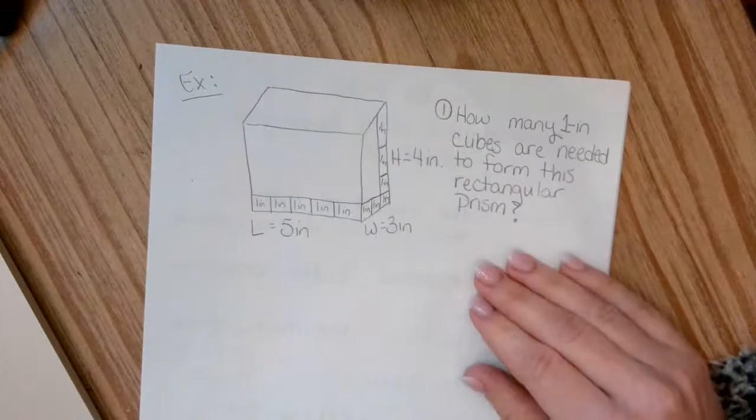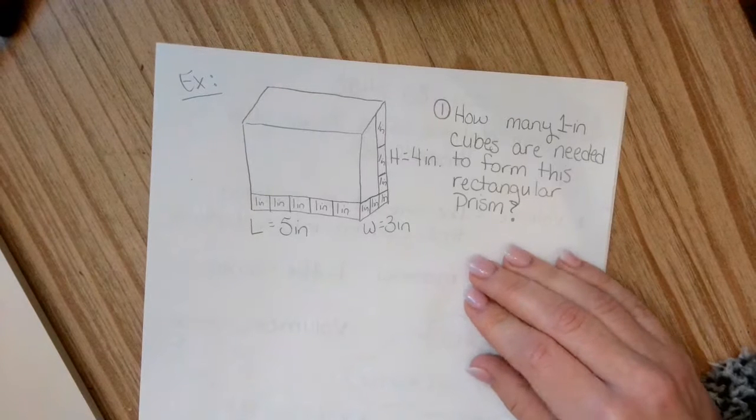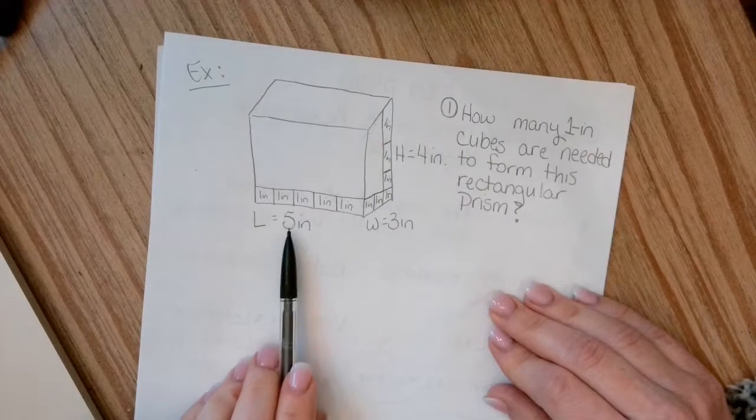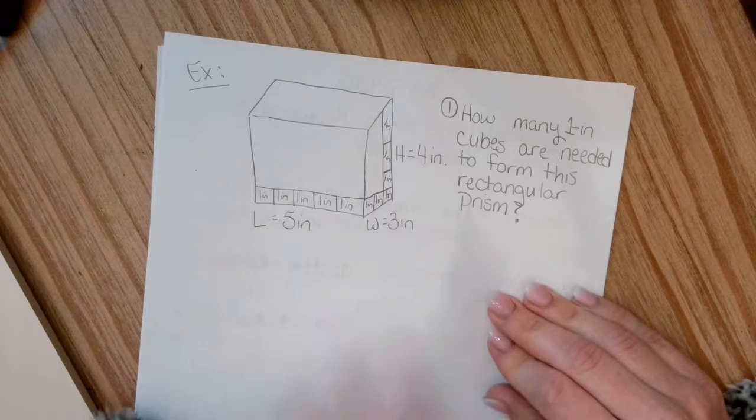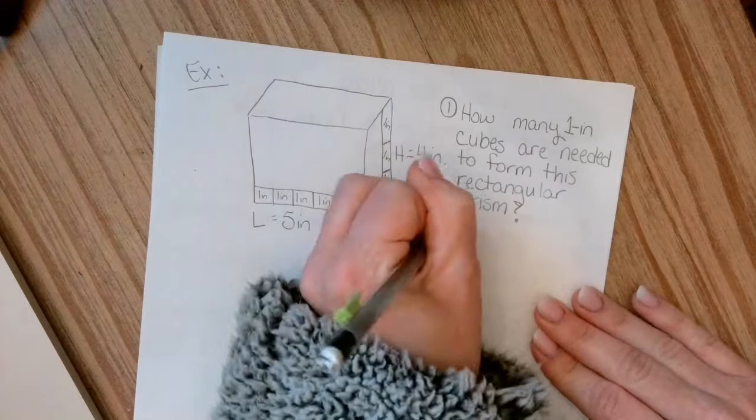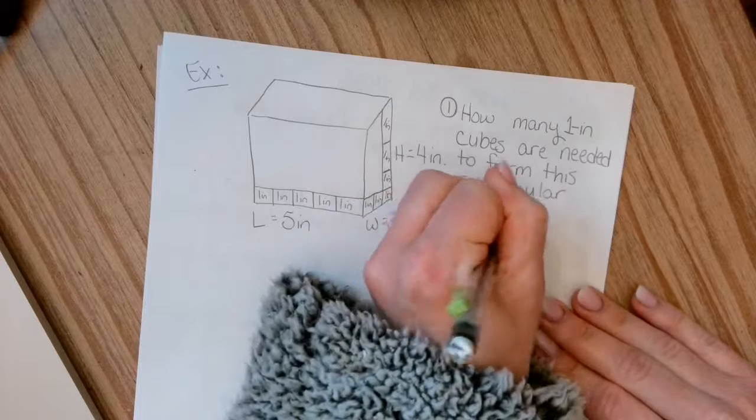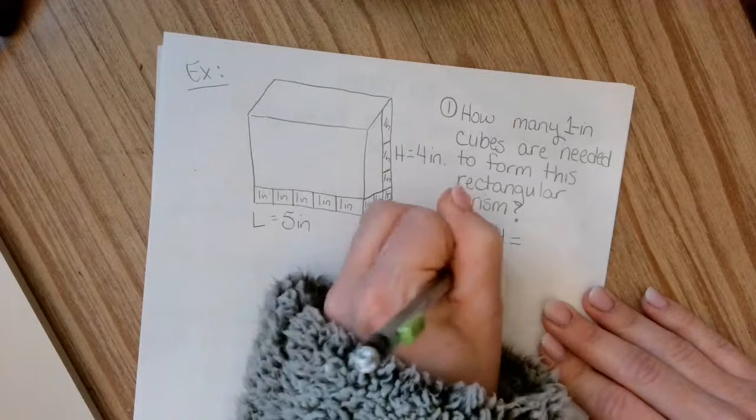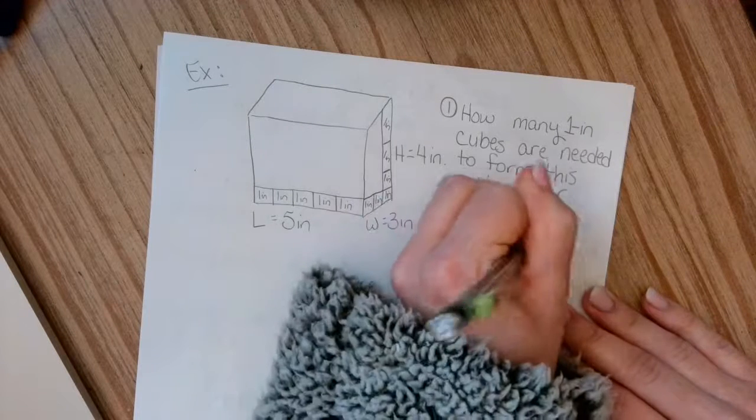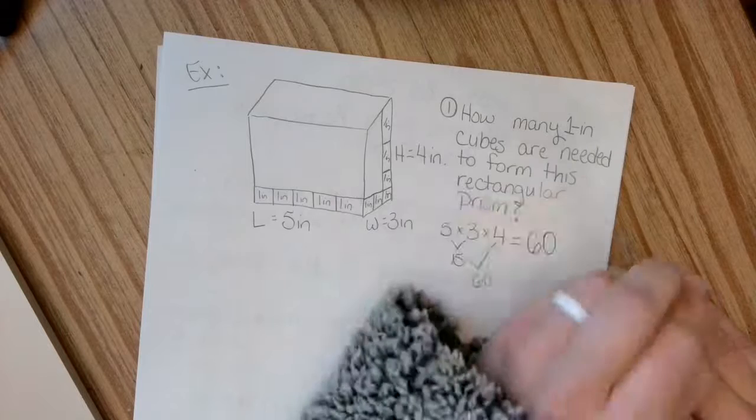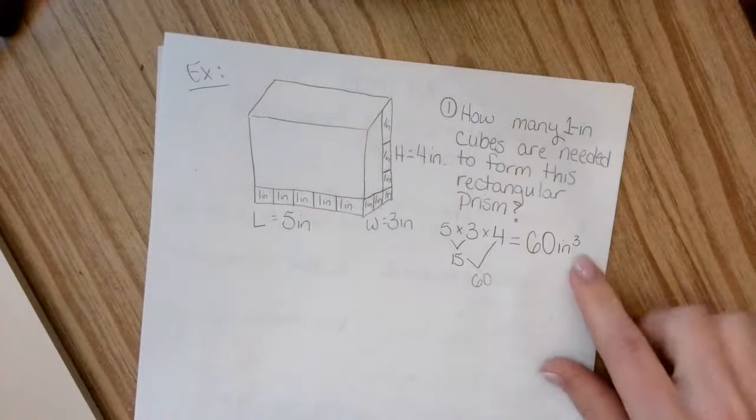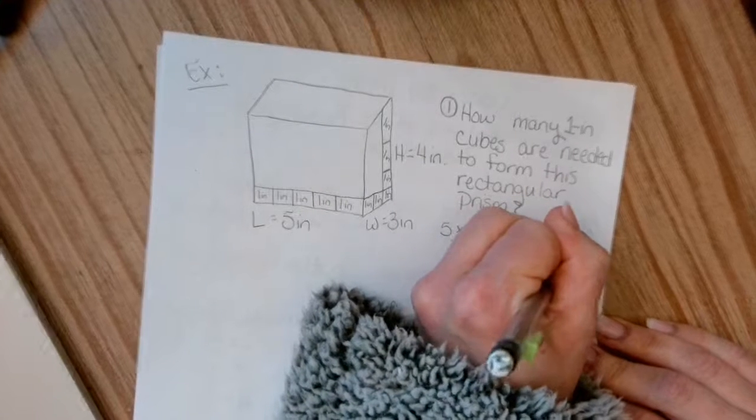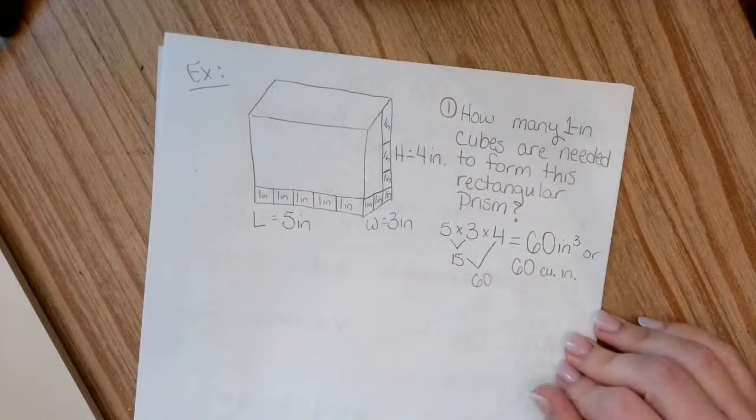So all this is actually asking us to do is just get the volume. It's just worded a little bit more complicated to get you to think. So in order to get this answer, all we really have to do is multiply five times three times four, and that's it. So five times three is 15, and then 15 times four is 60. So my answer for that first question is 60 inches, and I can't forget that little cubed exponent there. So I can write it like that, or I can write it as 60 cu inches, and that's my answer.